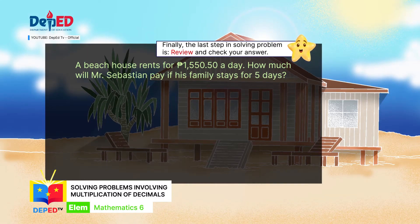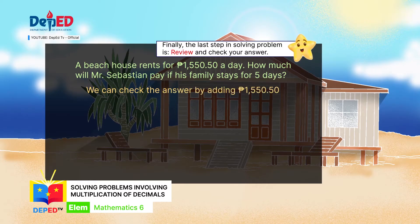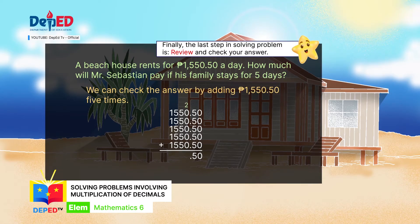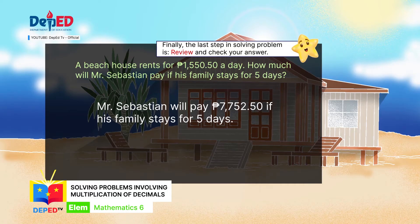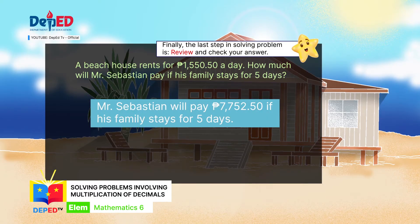Finally, the last step in solving the problem is review and check your answer. Since we have not yet discussed division of decimals, we can check the answer by adding 1,550 pesos and 50 cents five times. We arrive with the same answer of 7,752 pesos and 50 cents. That means Mr. Sebastian will pay 7,752 pesos and 50 cents if his family stays for 5 days.